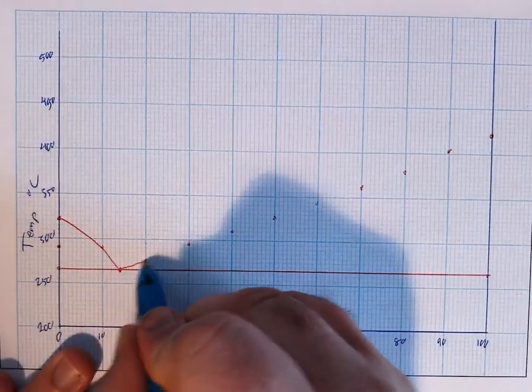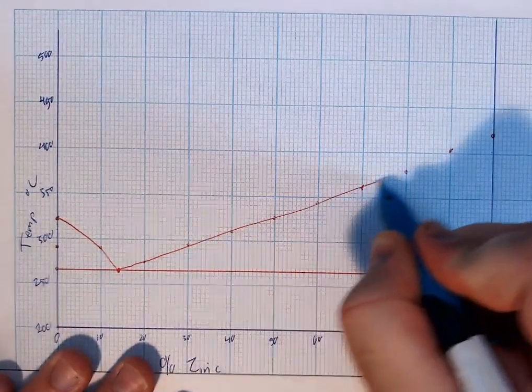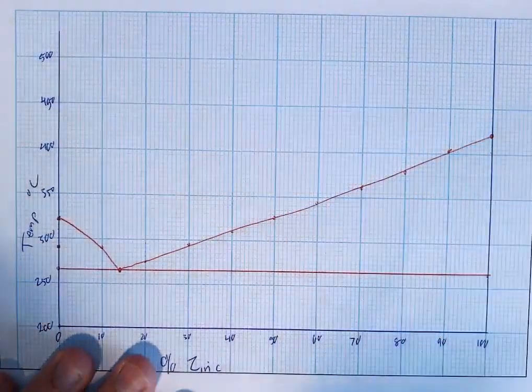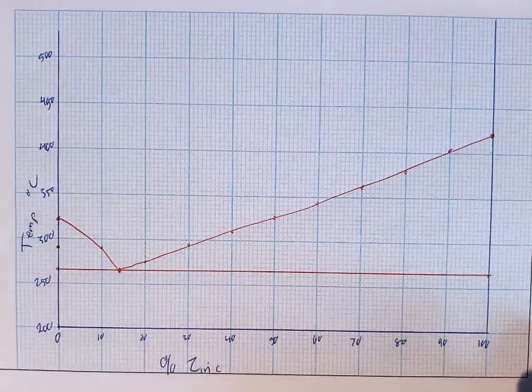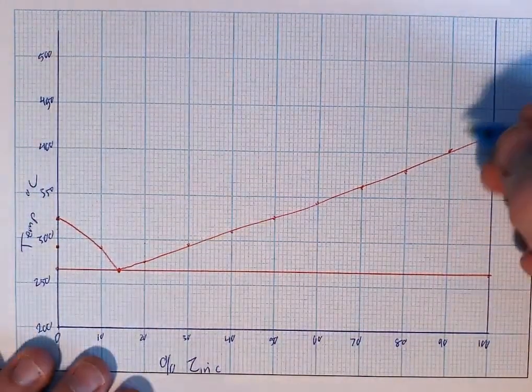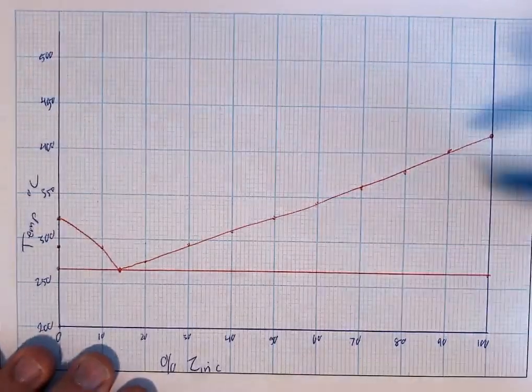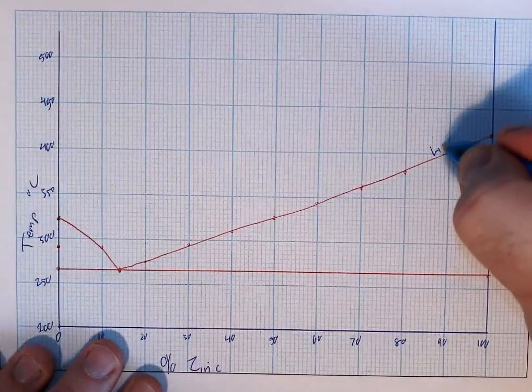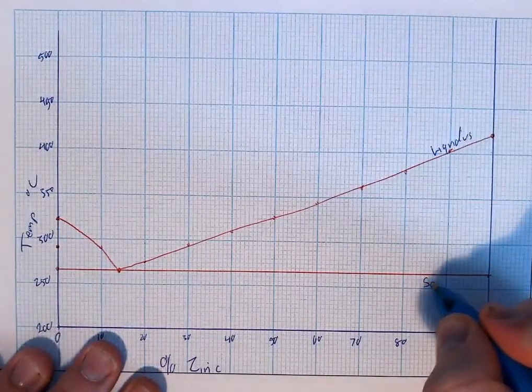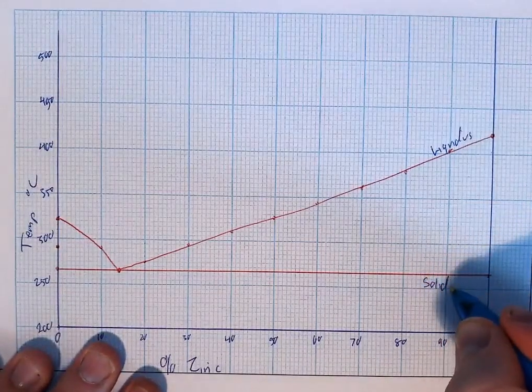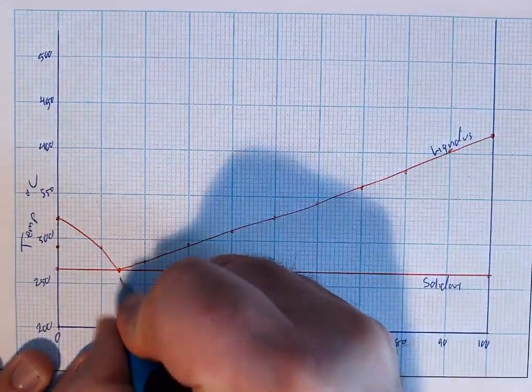It won't be straight lines. There's a slight curve in it and that is your eutectic alloy. Now you're always asked to label three points on this diagram. You have your liquidus, solidus, and your eutectic.